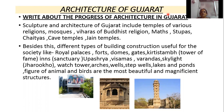Besides these, different types of buildings useful to society were also built: royal palaces, forts, domes, gates, Kirtistambha, Inns, Upasraya, Visramas, Verandhas, skylights, Jarukhu, watchtowers, arcs, wells, step wells, lakes, ponds, and figures of animals and birds. They are the beautiful and magnificent structures.